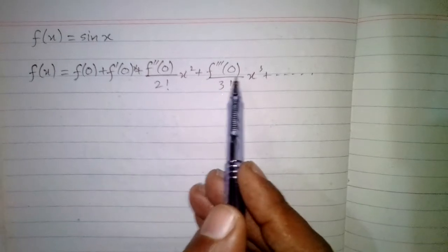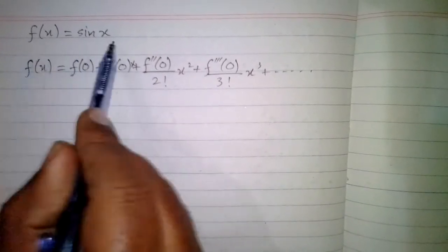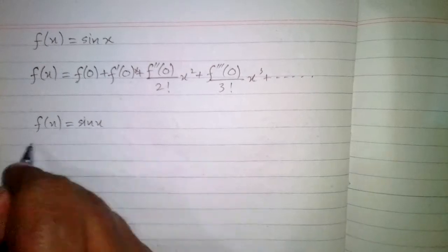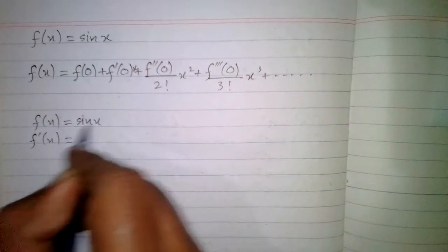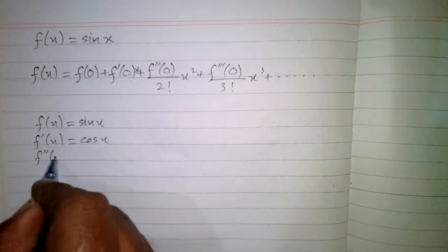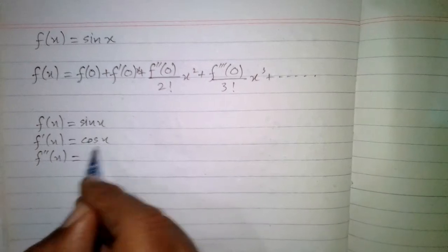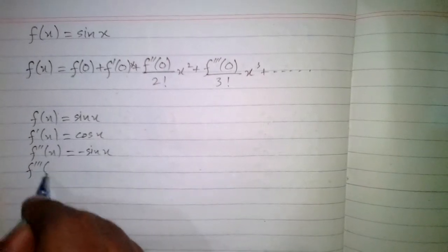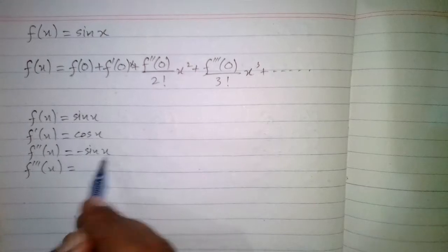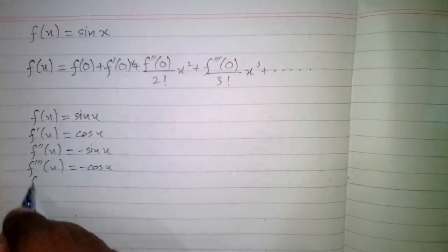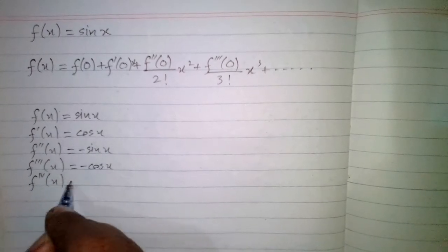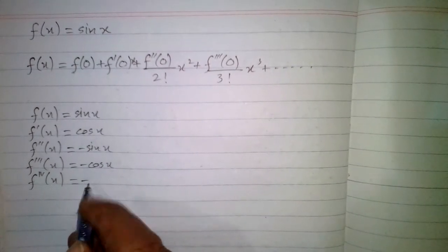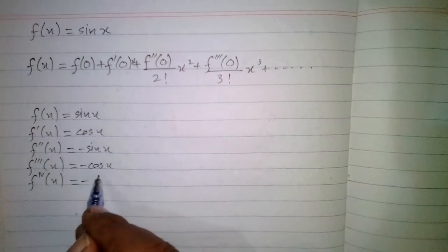First we have to find the derivatives of this function. We have f(x) equal to sine x. The first derivative of sine x is cos x. The second derivative is the derivative of cos x, which is minus sine x. The third derivative is the derivative of minus sine x, which is minus cos x. Then the fourth derivative of minus cos x is minus times minus sine x, which equals sine x.